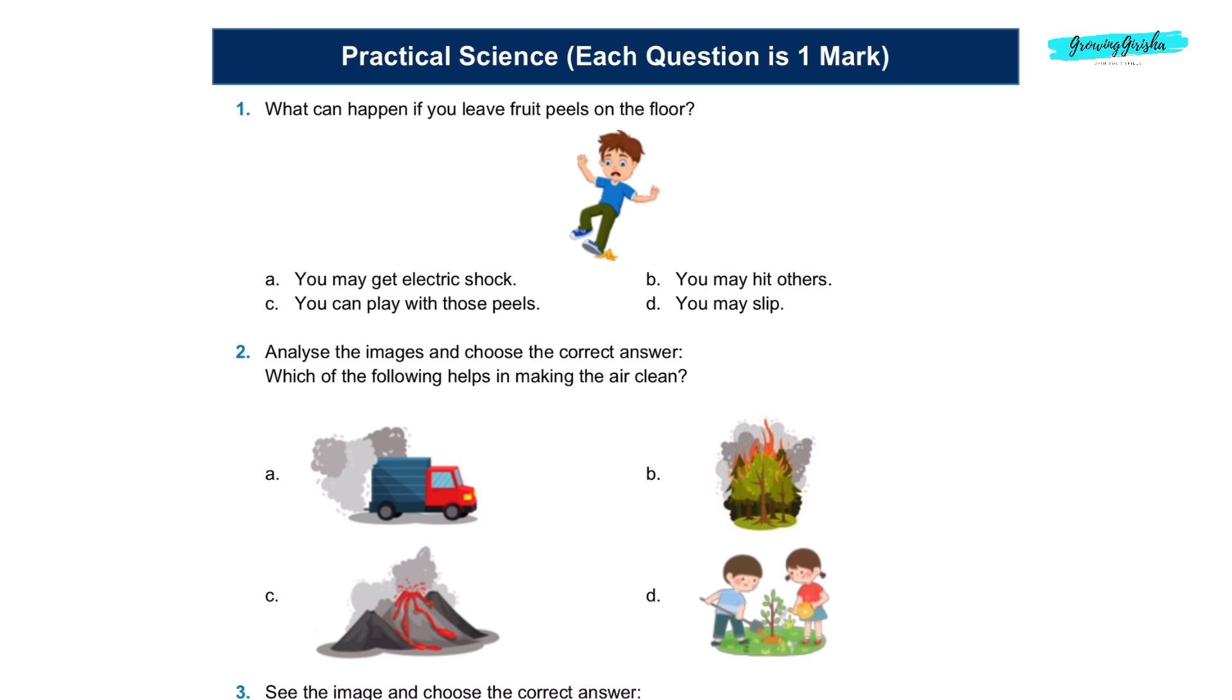Question 1. What can happen if you leave fruit peels on the floor? Option D, you may slip. Question 2. Analyze the images and choose the correct answer. Which of the following helps in making the air clean? Option D, planting trees.